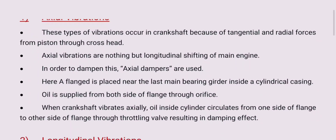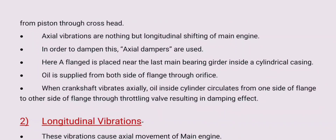A flange is placed near the last main bearing girder inside the cylindrical casing. Oil is supplied from both sides of the flange through an orifice. When the crankshaft vibrates axially, oil inside the cylinder circulates from one side of the flange to the other side through a throttling wall, resulting in a damping effect.